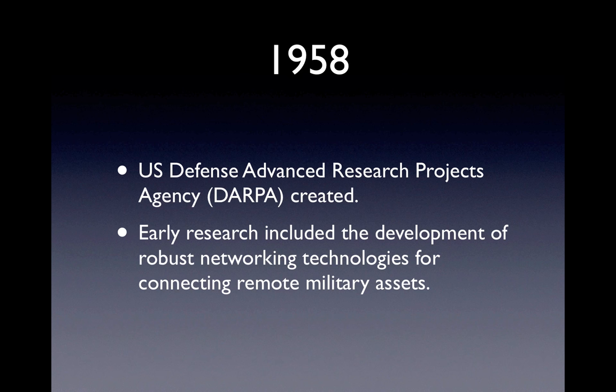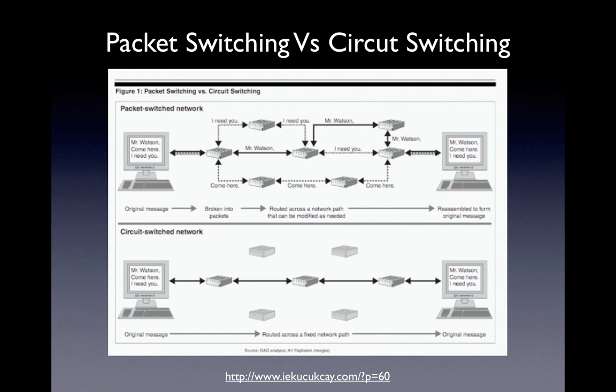In 1958 there was an organisation called the US Defence Advanced Research Projects Agency, or DARPA, who still exists today. They were essentially a research wing of the United States military, and this was around the time of the Cold War. One of the things they were looking at was how to create a robust network connecting all military installations, such that in the event of a nuclear war, if a big chunk of the network got taken out, they could still communicate. The technology developed to deal with this was known as packet switching.